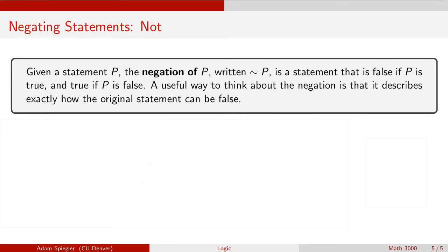One last concept to introduce before the quiz is the idea of negation. Given a statement P, we can define the negation of P, which we write with a little squiggle — a tilde. We call this the negation symbol. It is a statement that is false if P is true, and true if P is false. Let's take a look at some examples to illustrate negations.